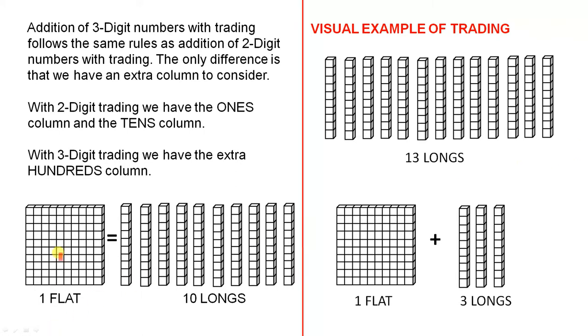In the earlier video we saw such thing as a flat. That's a flat there and it's basically ten by ten of the little cubes, which means it's a hundred cubes. And that's the same as ten longs, because each of these longs has ten small cubes in it. So ten tens are a hundred. So one flat is the same as ten longs.